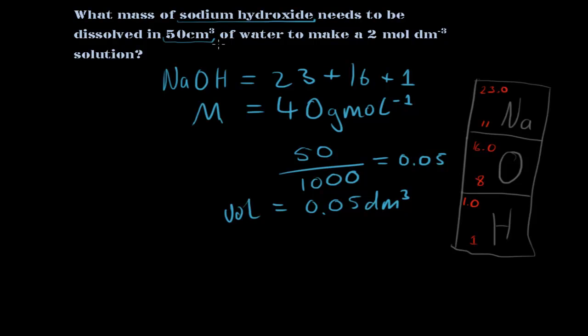Let me write it down here. Volume equals 0.05 decimeters cubed. Yeah. Okay, so what else do we know? We also know the concentration, and that's 2 moles per dm³. So because we know volume and concentration, we can first use the equation moles equals concentration multiplied by volume to work out the number of moles.